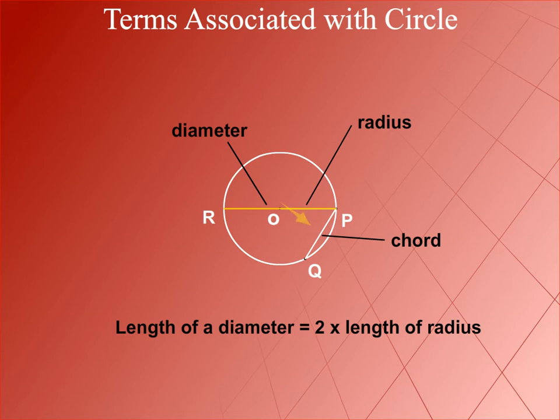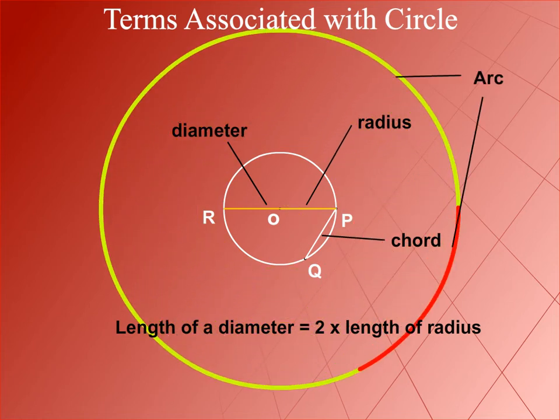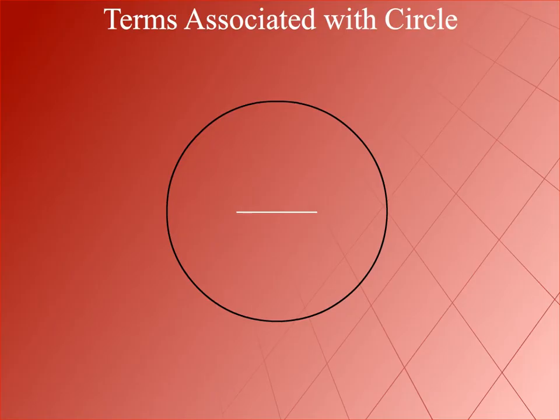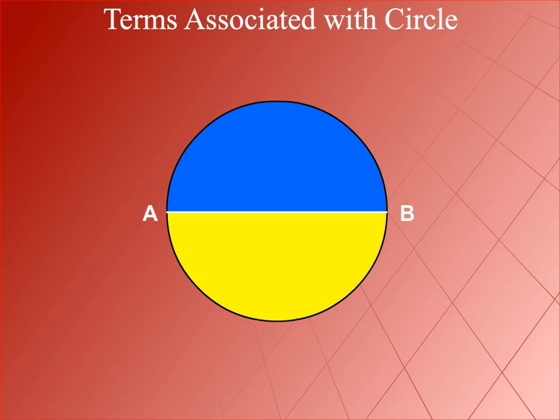The chord PQ divides the circle into two parts. Each part is called an arc of the circle. The diameter AB divides the circle into two parts. Each part is called a semicircle.